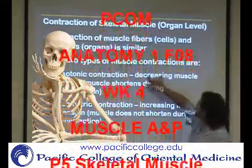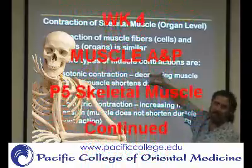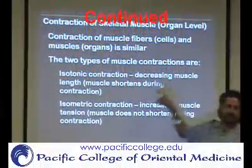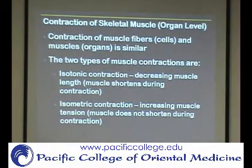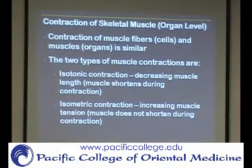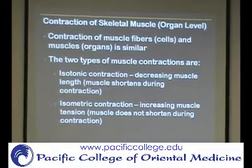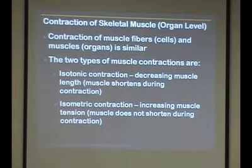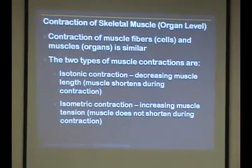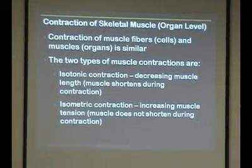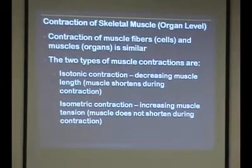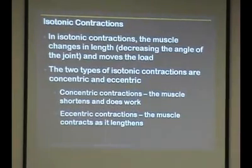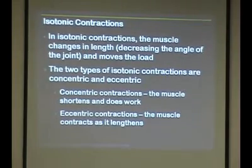Changing muscle length means the muscle shortens or lengthens during contractions. There are two different types of isotonic contraction: concentric and eccentric. Just remember, isometric stays the same length, while isotonic changes in length — shortening is concentric and lengthening is eccentric.